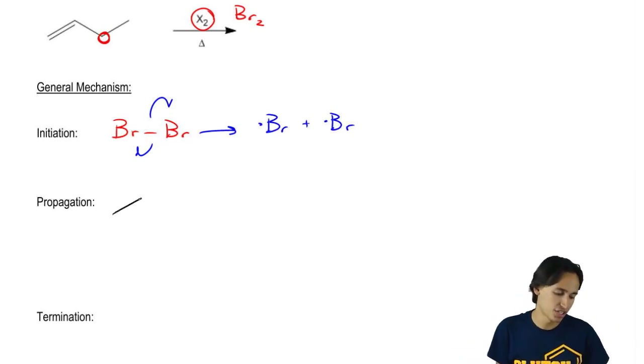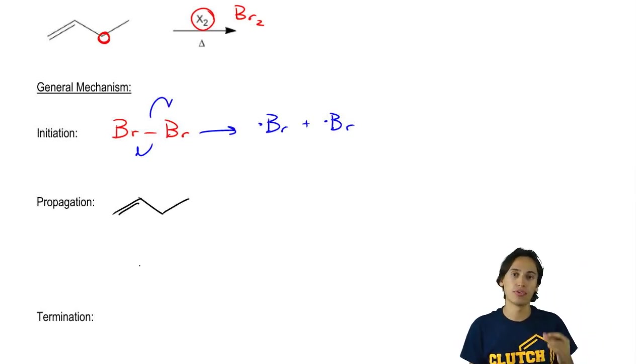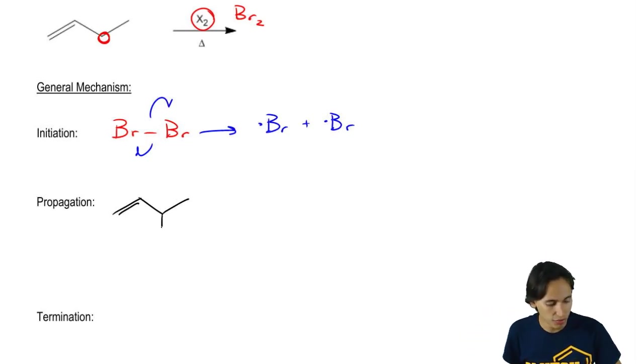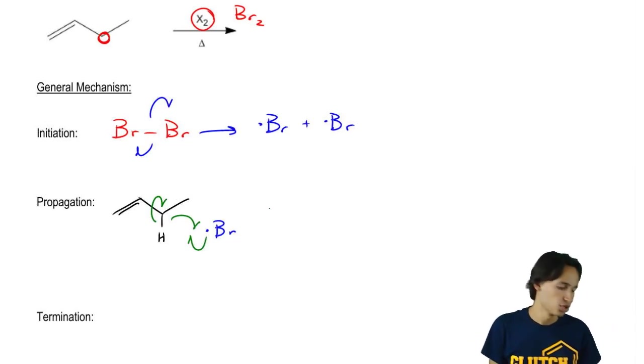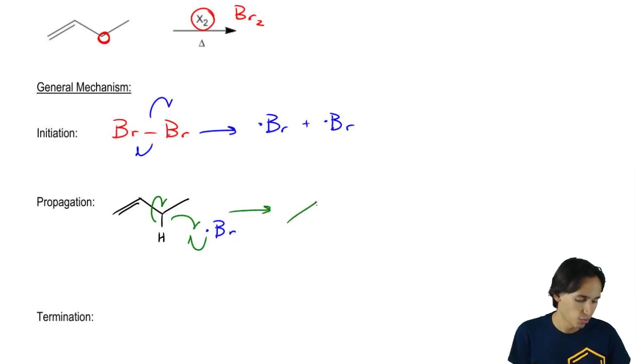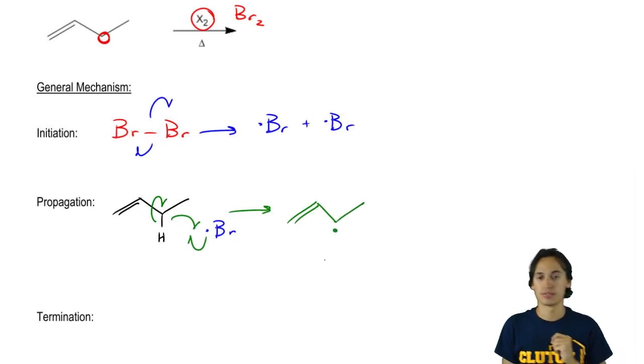Now we have the propagation step. In the propagation step, I'm going to want to pull off the hydrogen that's going to give me the most stable radical, so obviously it should be this one. Let's go ahead and react that. I would use three arrows: one into the middle of nowhere, one into the middle of nowhere, and then one right there. So what I wind up getting is a radical that looks like this.